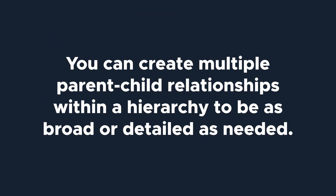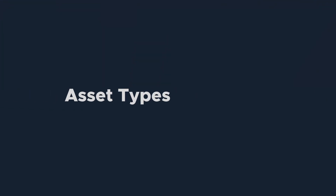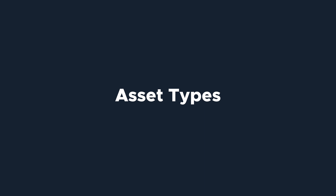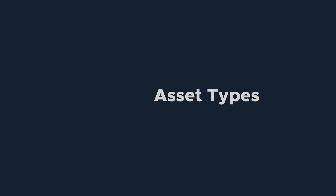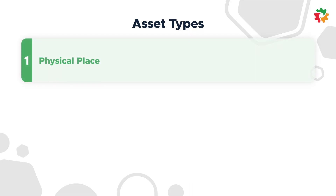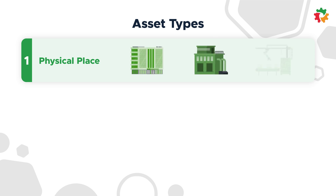You can create multiple parent-child relationships within a hierarchy to be as broad or detailed as you need. If you're not sure which of your assets would be considered a parent asset or how to organize your assets, think about assets as one of three types. The first is a physical place — this can be something as broad as a building on a university campus or as specific as a loading dock or production line in a factory. These are often used as parent assets to neatly organize equipment where it lives within a space.